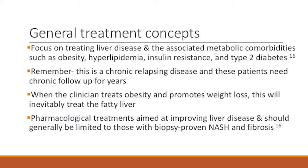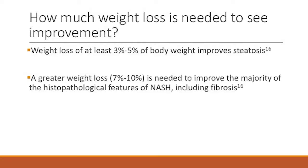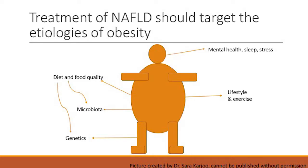Focusing on comorbidities is a key concept. Some medicines promote weight loss and some help during the development of NASH and fibrosis. About 3% to 5% weight loss will help improve steatosis, and 7% to 10% will reverse fibrosis and features of NASH. When I see a patient, I approach them by asking questions in several categories, starting with mental health: Is the patient emotionally eating? How is their sleep? Do they have sleep apnea? Is there a lot of stress?